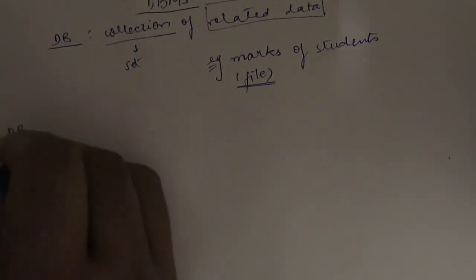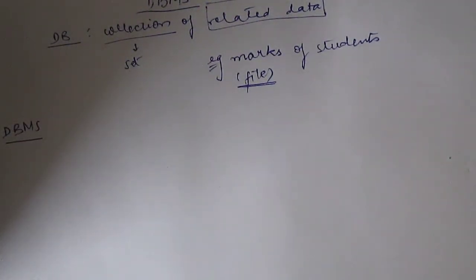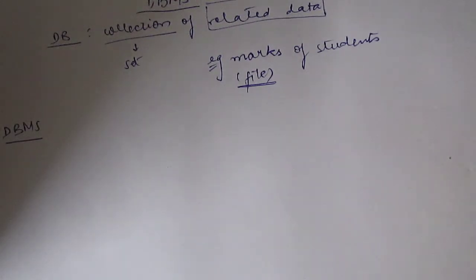Now we have to understand DBMS. DBMS means Database Management System. DBMS is a software. We know what a database is; we manage that database to access it in a very efficient way using the software called DBMS.